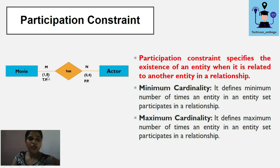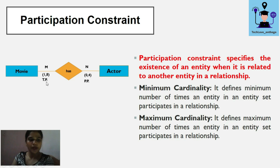These constraints can also be written as total participation (TP) or partial participation (PP). Total participation means at least one entity will participate in the relationship. Partial participation means it is possible that no entity is participating.